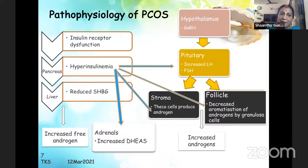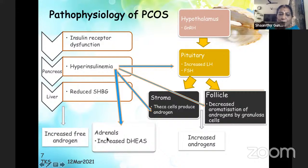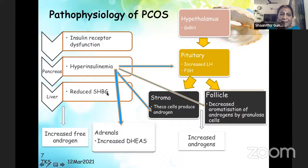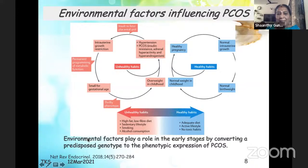The pathophysiology is essentially insulin receptor dysfunction, where there is excessive serine phosphorylation instead of tyrosine. Hyperinsulinemia is the sheet anchor — it acts on the adrenals leading to increased DHEAS, and on the ovarian stroma where theca cells also produce androgens. Hyperandrogenemia acts on follicles, causing decreased aromatization by granulosa cells. It also acts on the pituitary, increasing LH, and reduces sex hormone binding globulin, leading to increased free androgen.